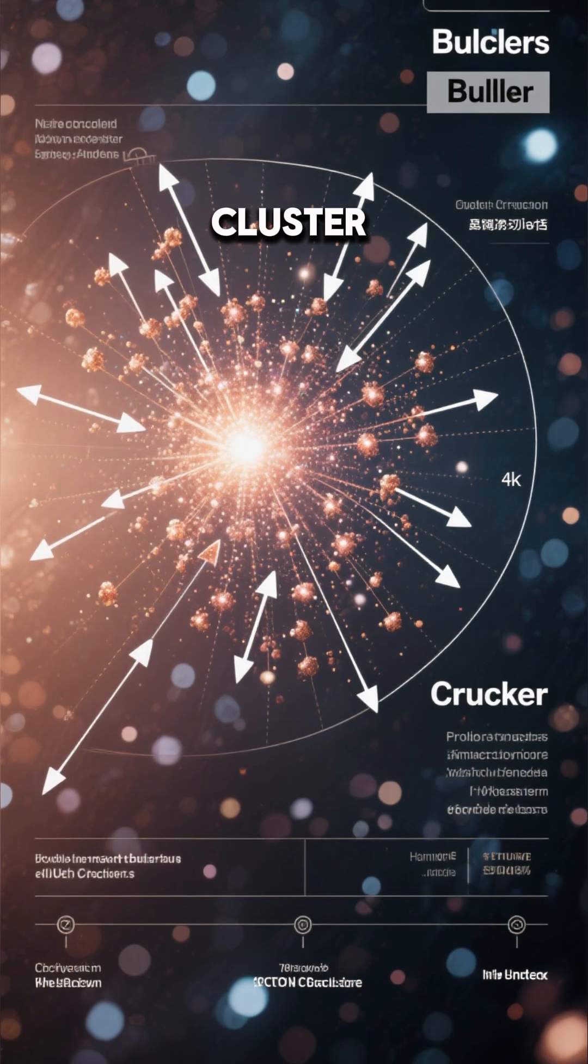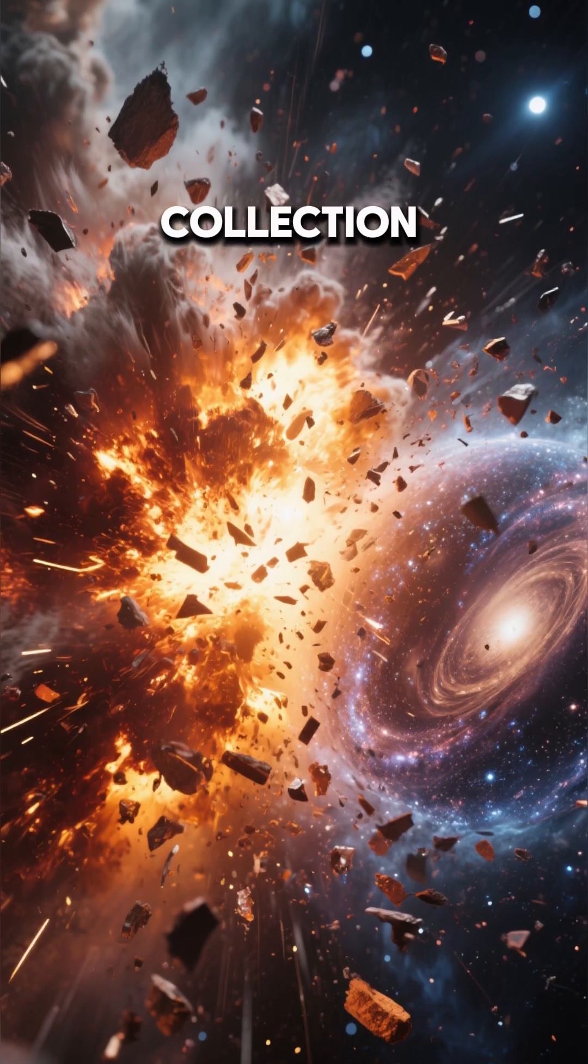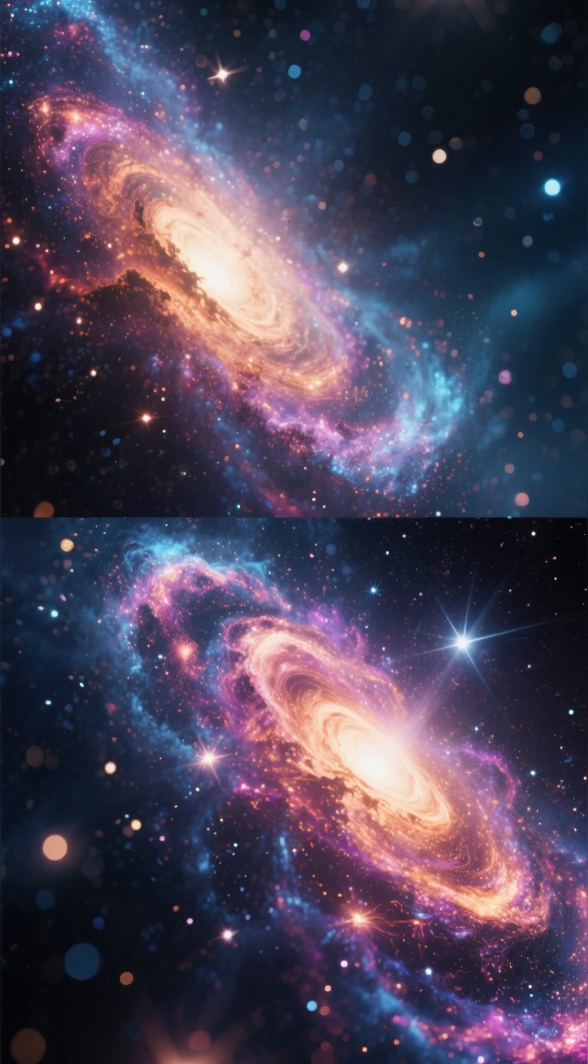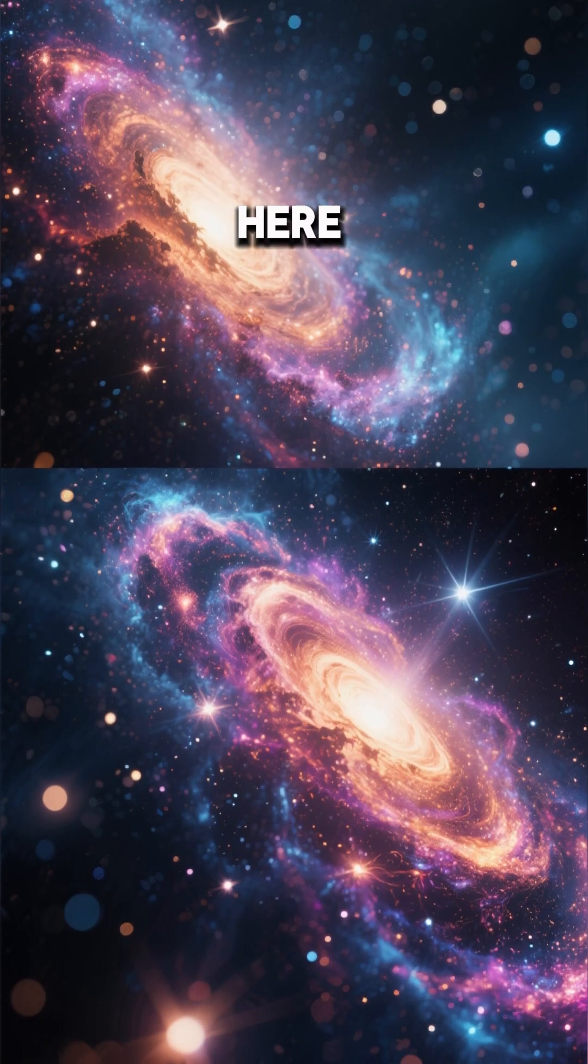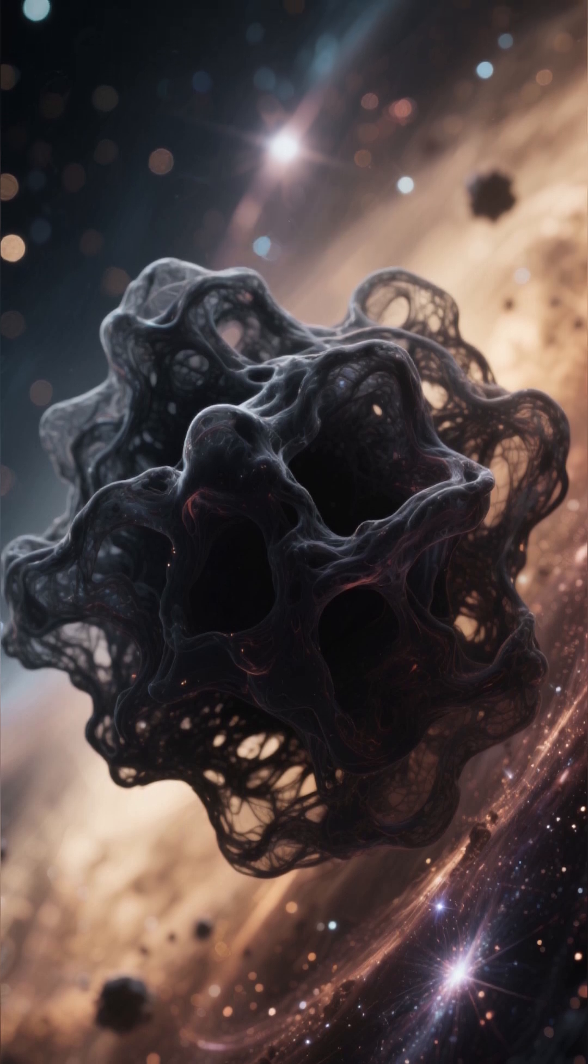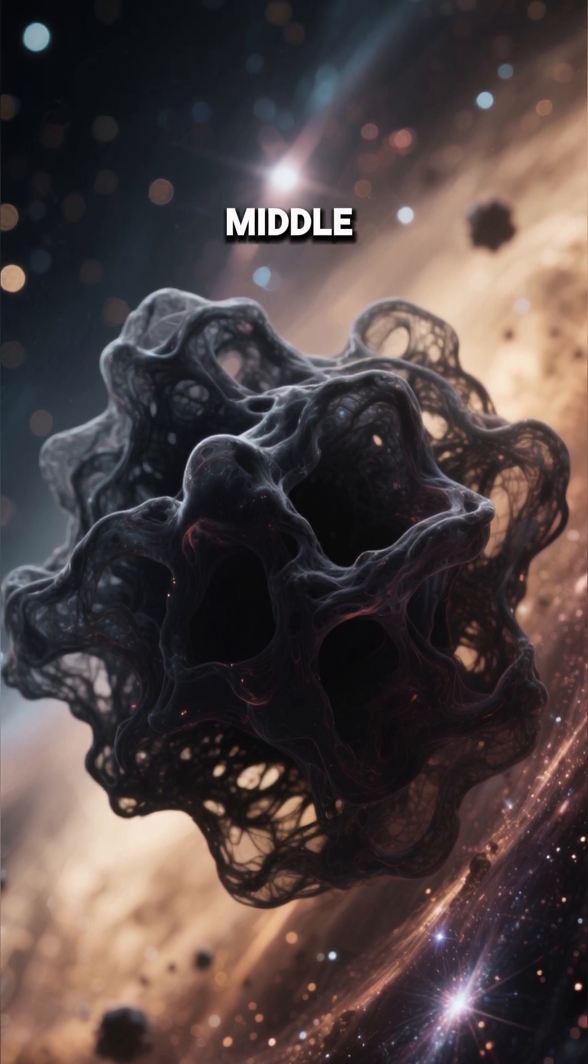The first line of evidence is the bullet cluster. A massive galaxy collection zoomed through space and crashed into another galaxy cluster. You can actually see the two clusters of galaxies here. But what's really crazy is that there's also this huge blob of dark matter in the middle.